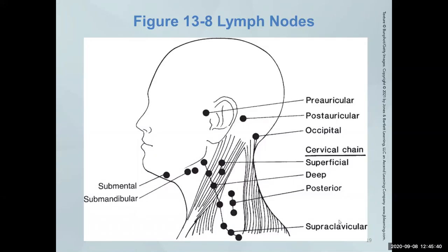You need to know the name and location of the lymph nodes you are palpating — there's a diagram available under Clinic Help on Canvas. When doing your extra-oral skill evaluation, I start at the occipital, post-auricular, preauricular, then come down to the submandibular and submental, then the sternocleidomastoid muscle and the cervical chain. You need to memorize these — not necessarily for the test on Tuesday, but be familiar with them before Monday when we go over the EOIO.